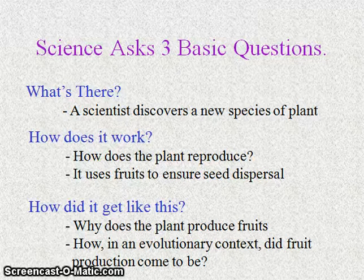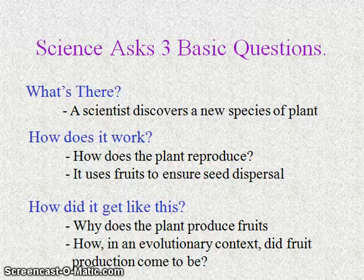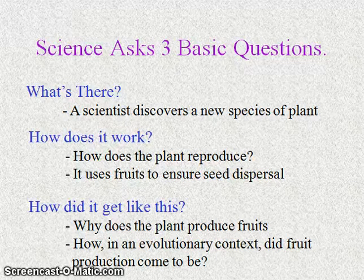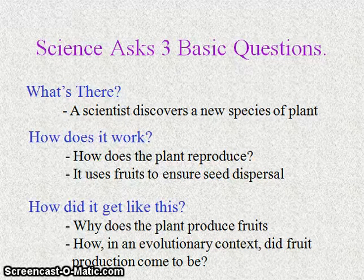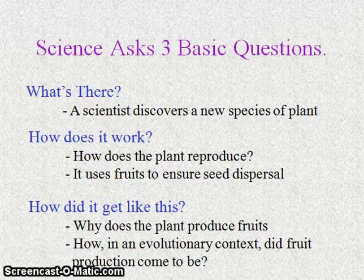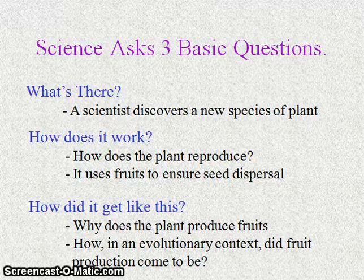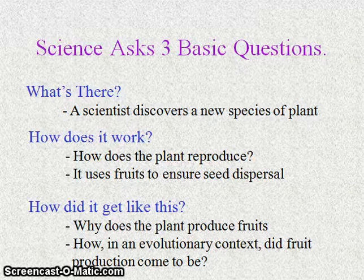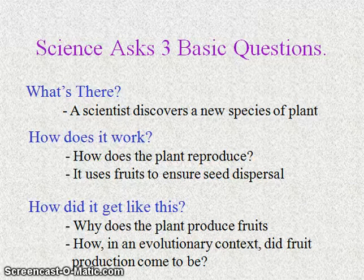The next question is: how does it work? Imagine that we've discovered a new species of plant — we might ask how does this plant reproduce? The answer could be that the plant uses fruits to ensure seed dispersal. Animals eat the fruit; within the fruit are the seeds, which are deposited by the animal in a different location and can germinate to grow new plants.